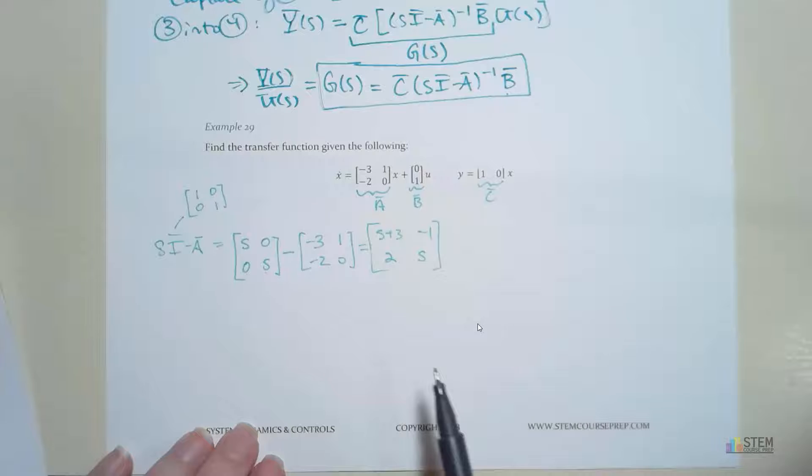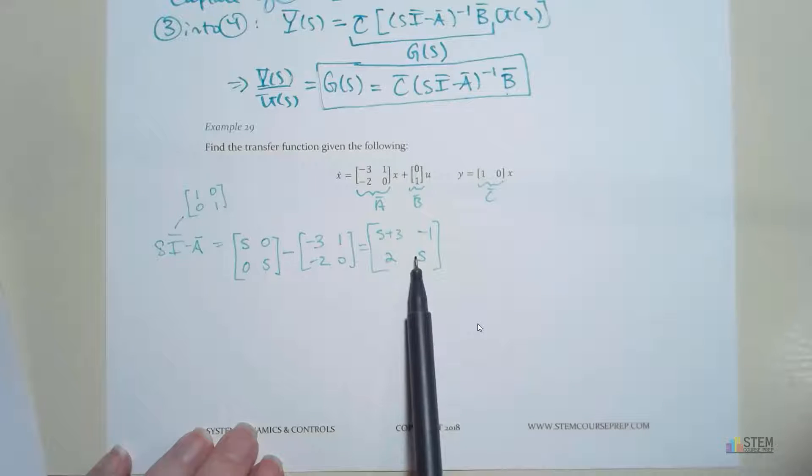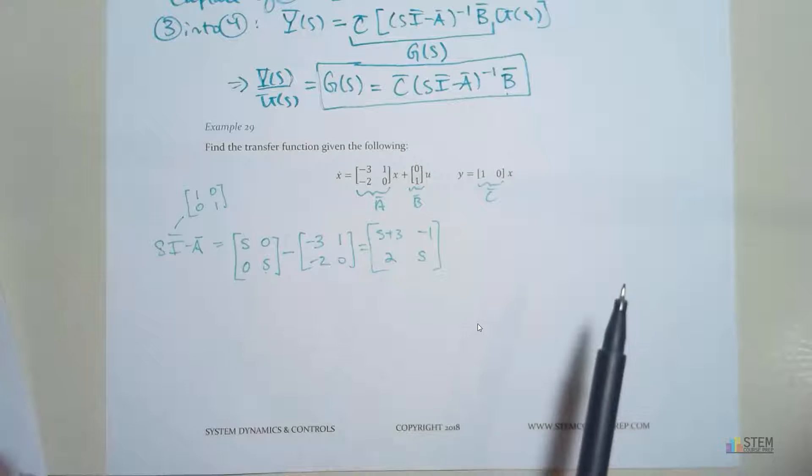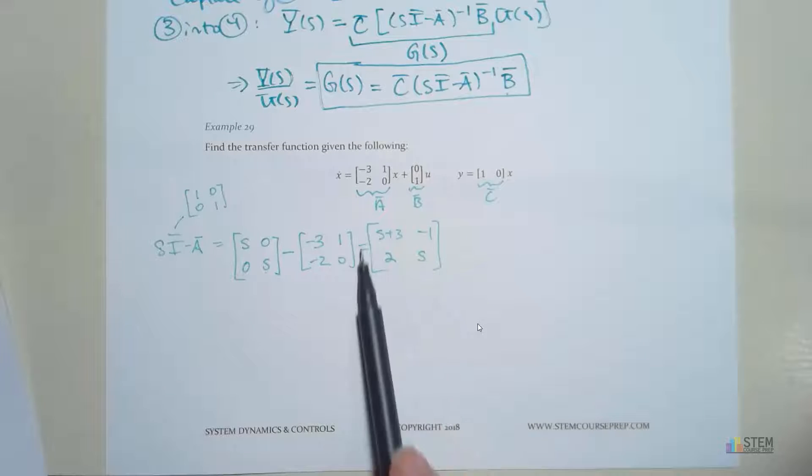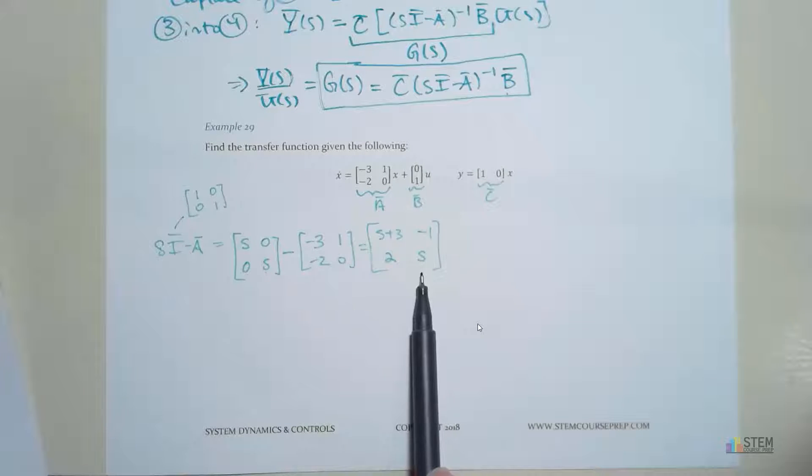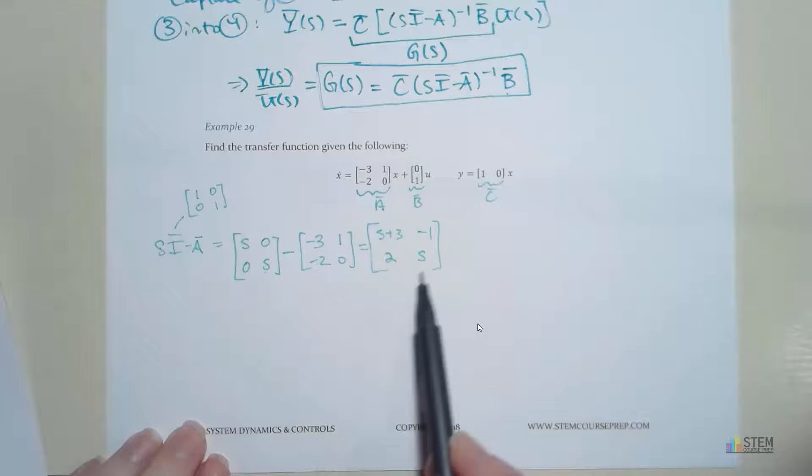Now here comes the fun part. You have to take this and do the inverse. However you want to do the inverse, have at it. But you've got to take the inverse of this. If you have one of the graphing calculators that has the CAS system, you can easily just put this in the calculator and it will do it for you because it will use symbols. Otherwise, you're going to have to do it by hand.